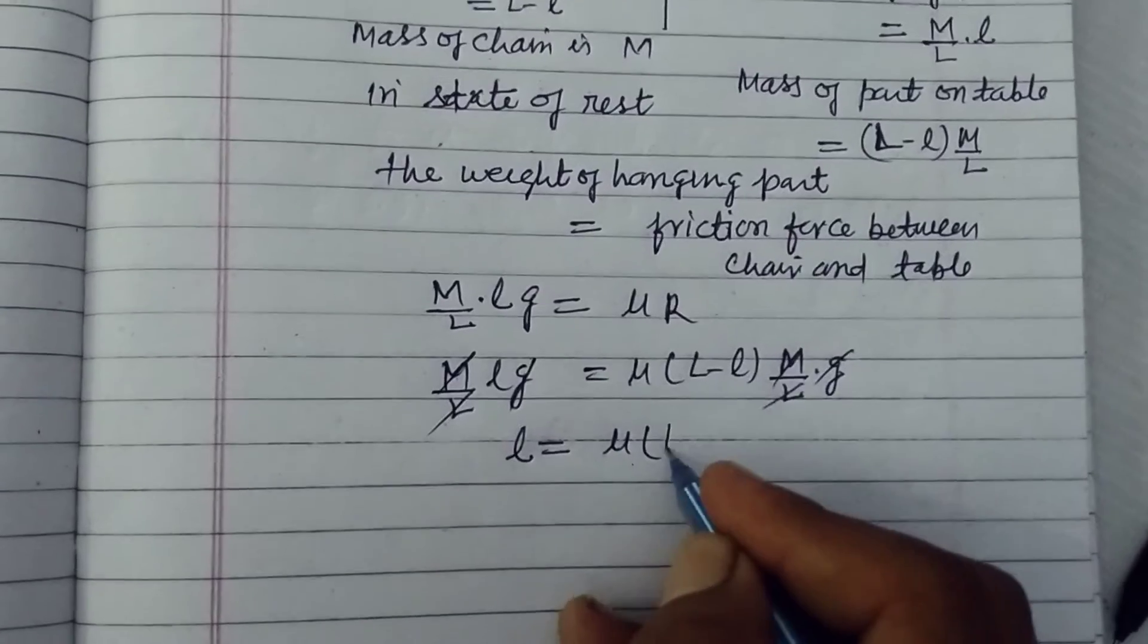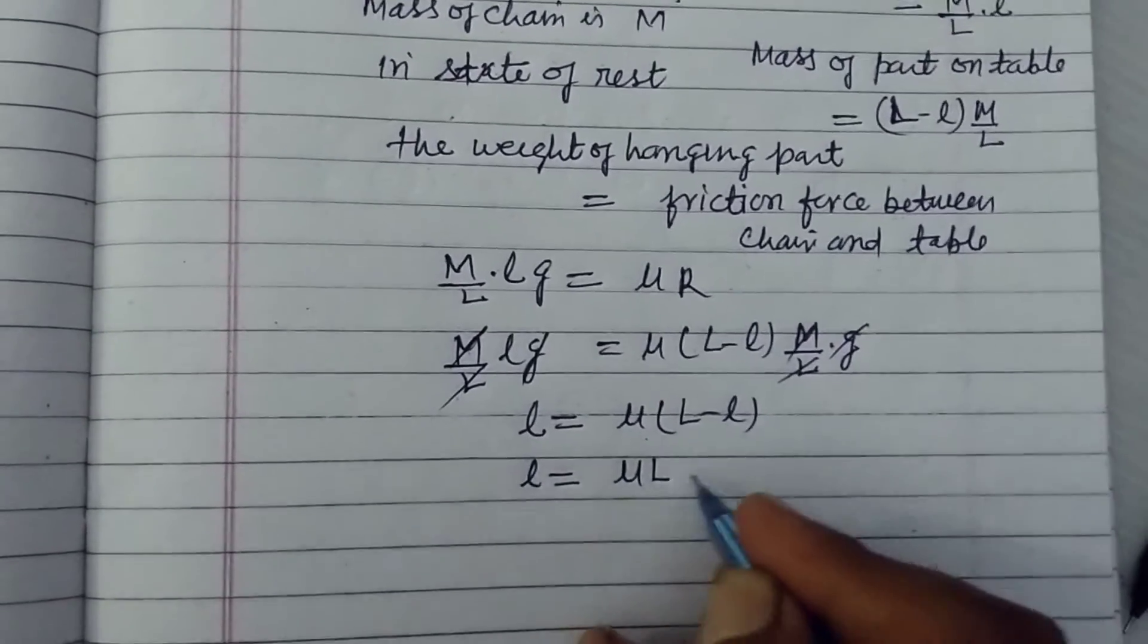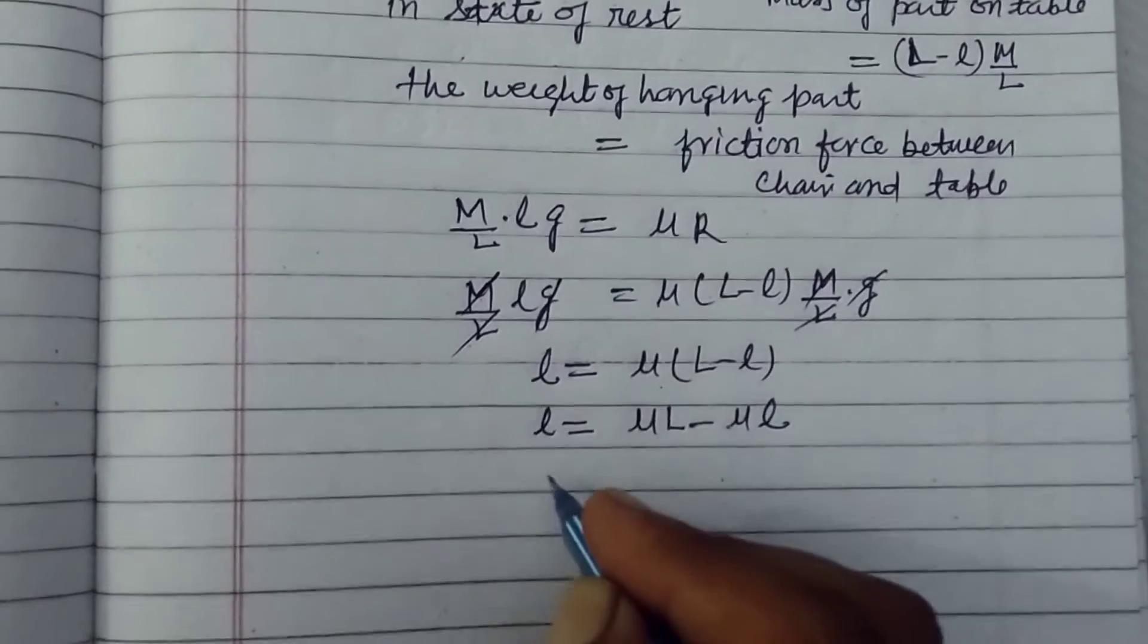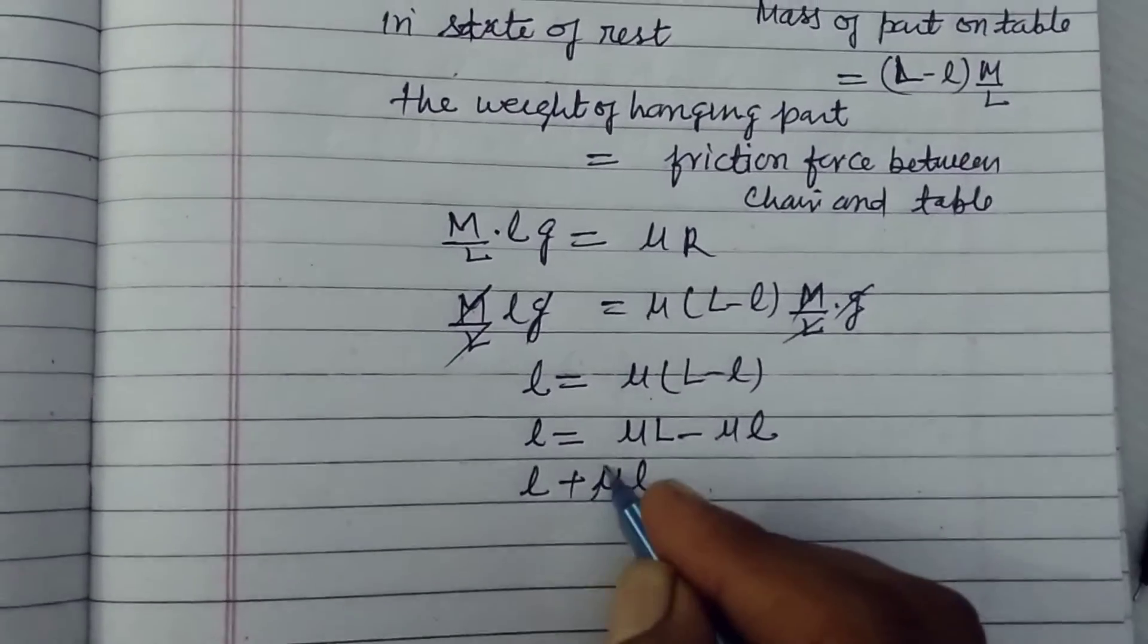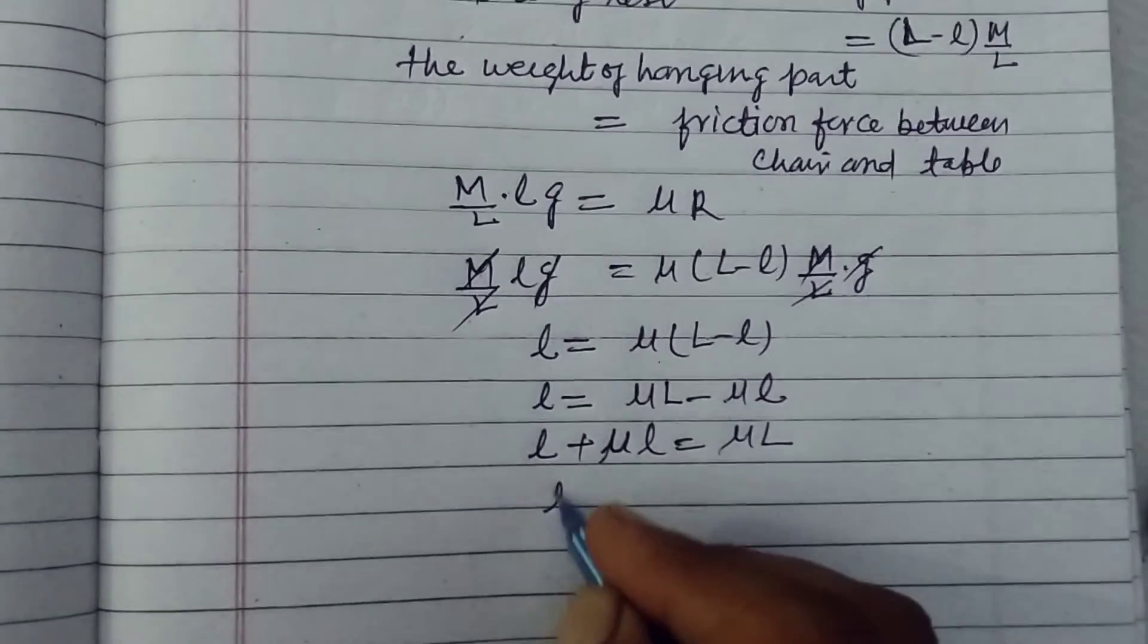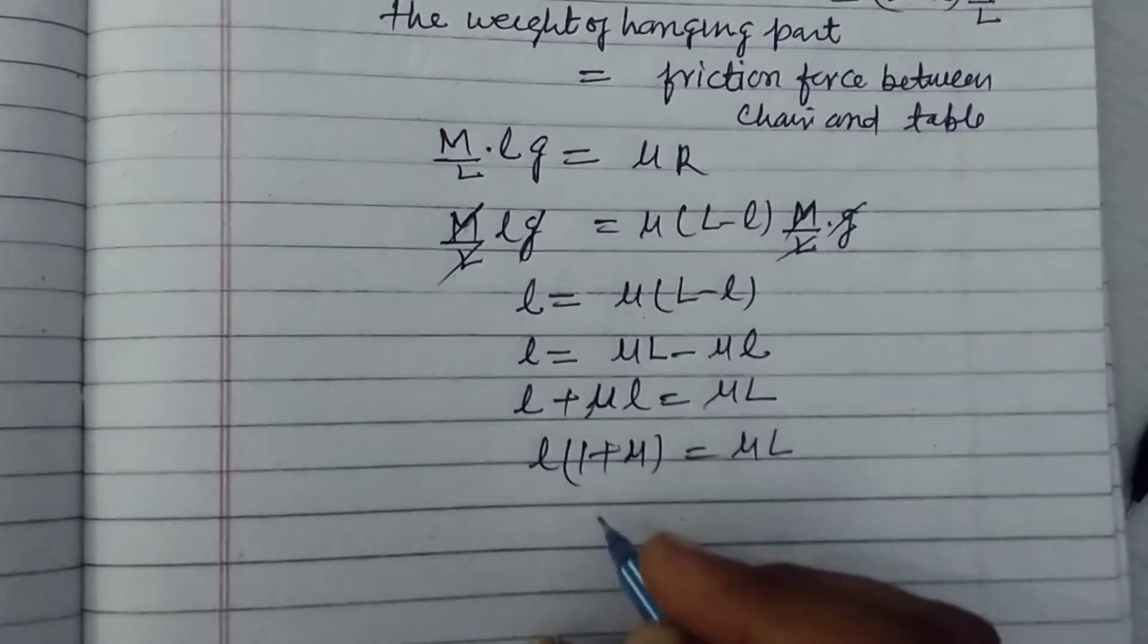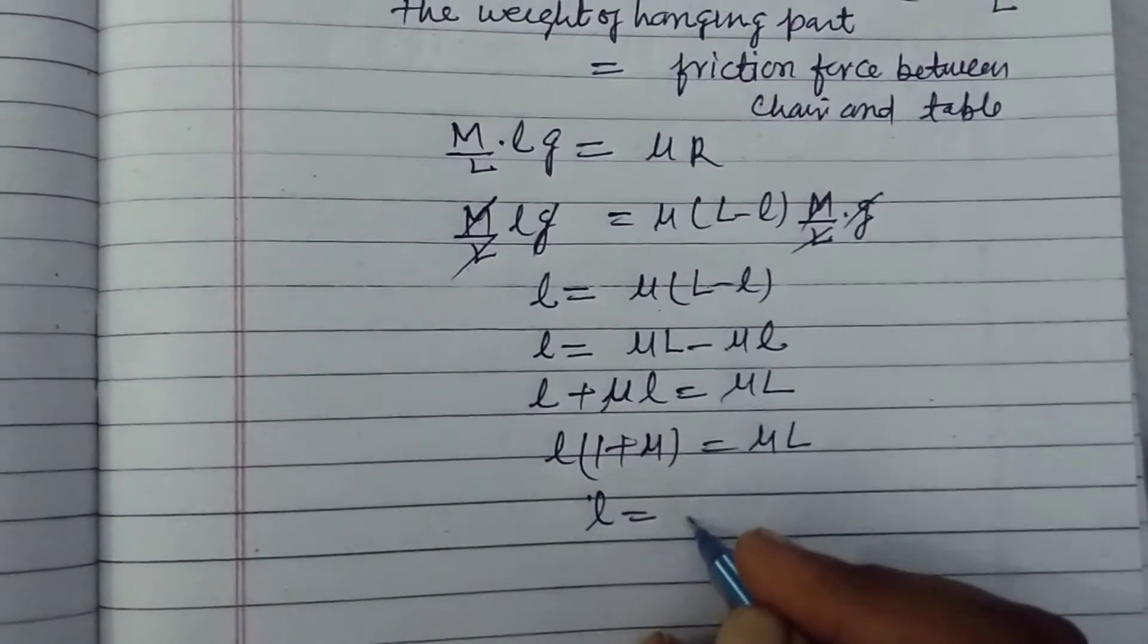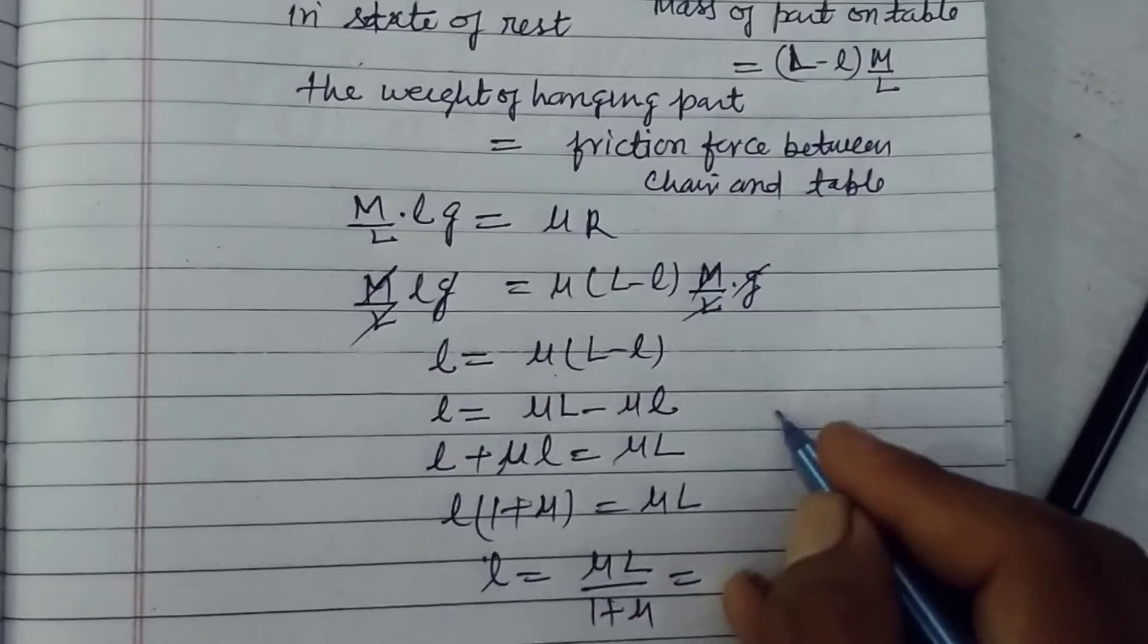l equal to mu L minus l. l equal to mu L minus mu small l. In this side, l plus mu l equal to capital L. L is common, 1 plus mu. Therefore l equal to mu L upon 1 plus mu.